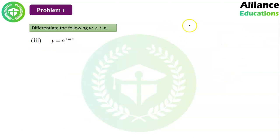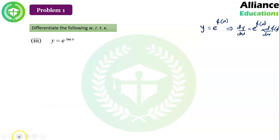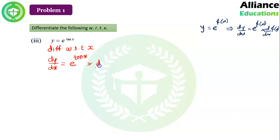Third question: y = e^(tan x). We know d/dx of e^f(x) = e^f(x)·d/dx(f(x)). So dy/dx = e^(tan x)·d/dx(tan x) = e^(tan x)·sec²x. We differentiate until a single x remains.